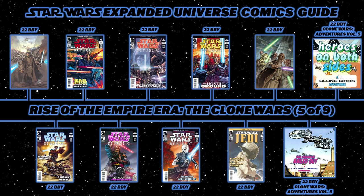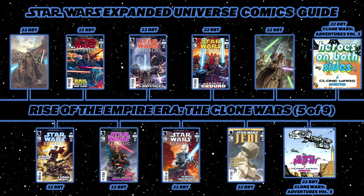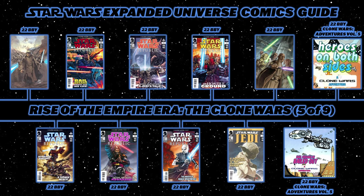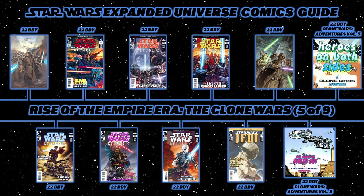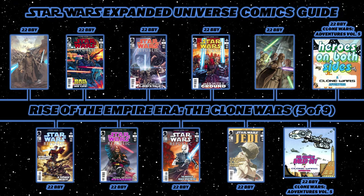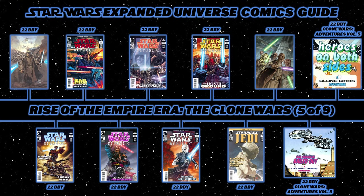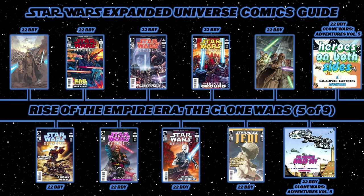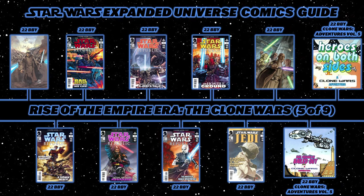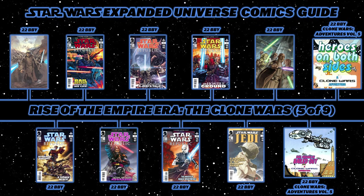Republic issue 64, Bloodlines, follows Jedi Ronhar Kim, who befriends a rising politician only to become the target of great evil years later. Then back to Republic number 60, Hate and Fear, with Obi-Wan Kenobi and ARC Trooper Alpha as prisoners in Asajj Ventress's castle. Then Republic issue 62, No Man's Land, again starring Obi-Wan and Alpha, pursued by Separatists after escaping Ventress's fortress.